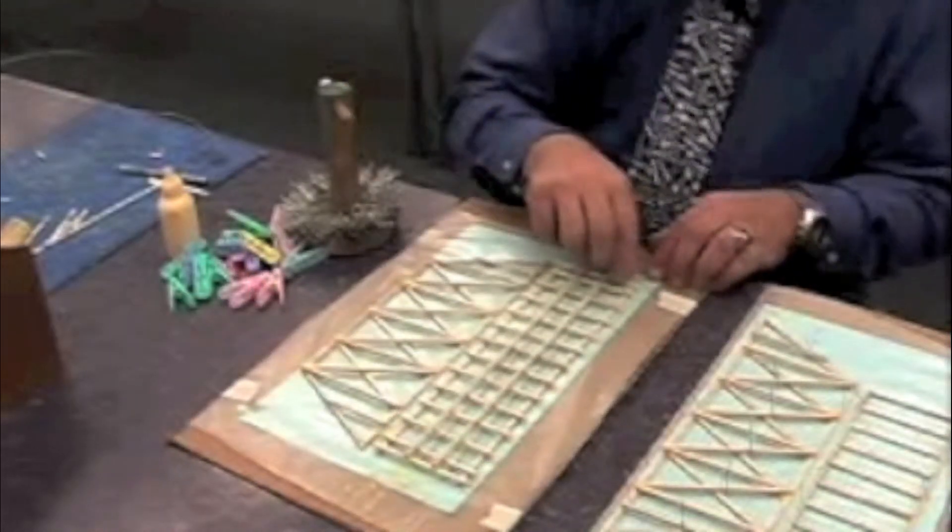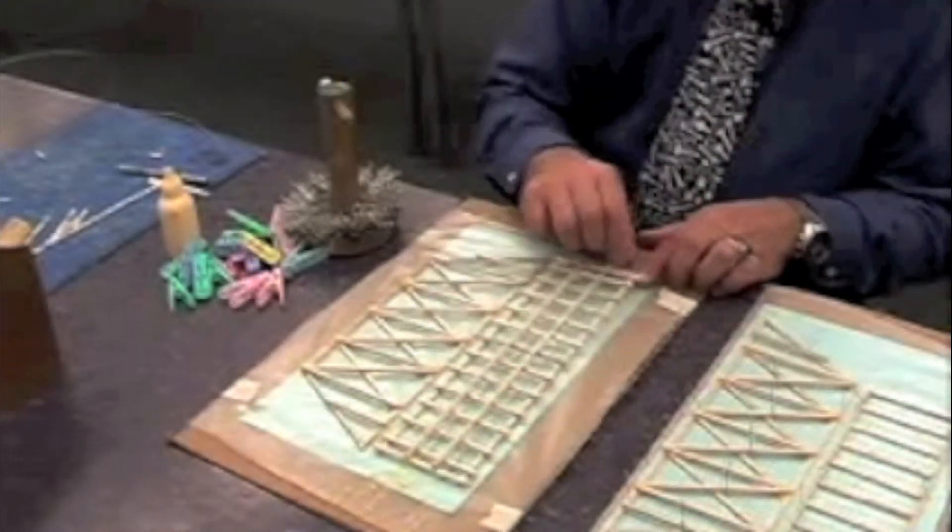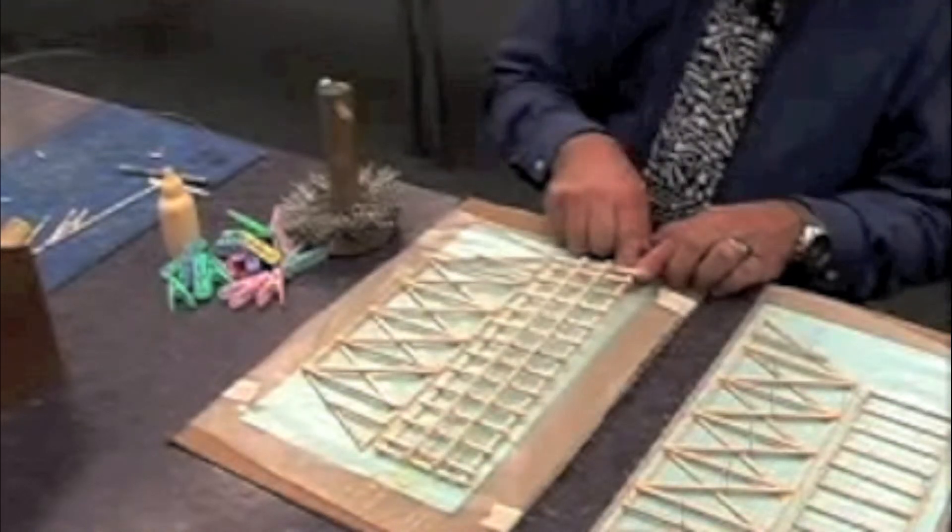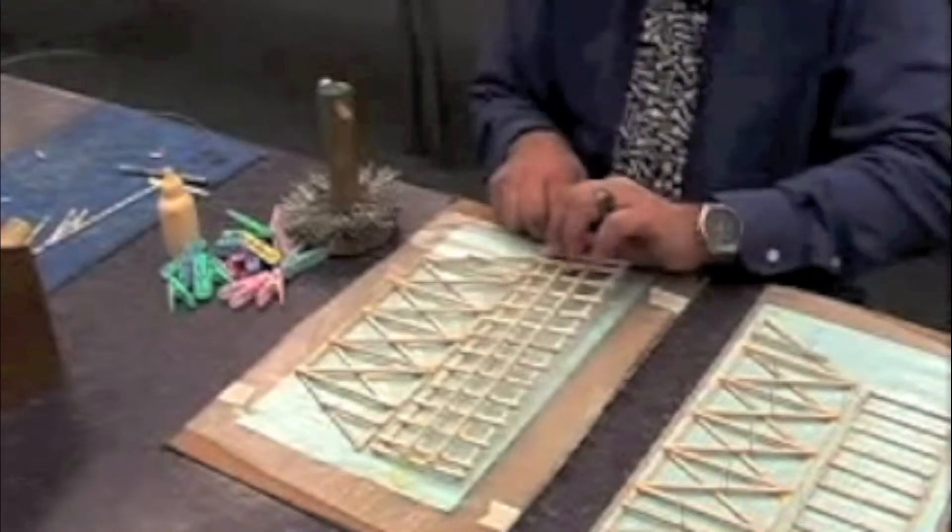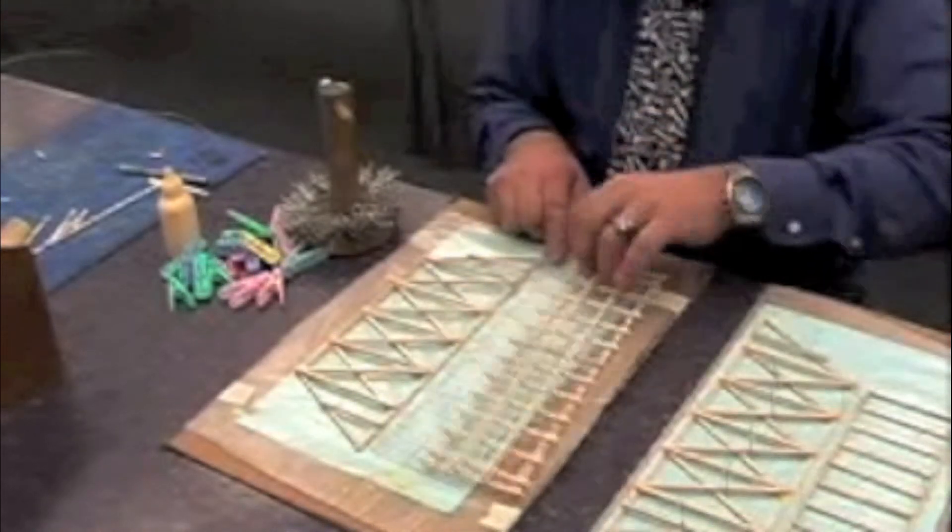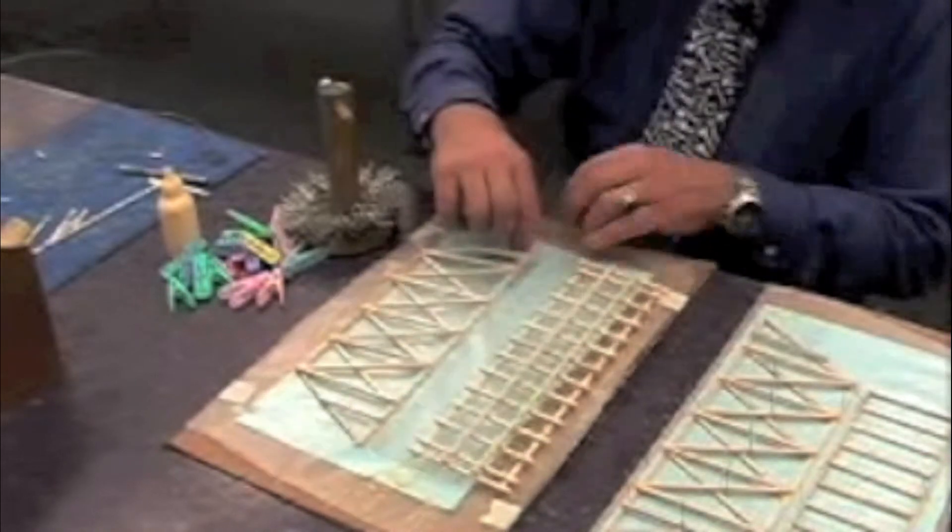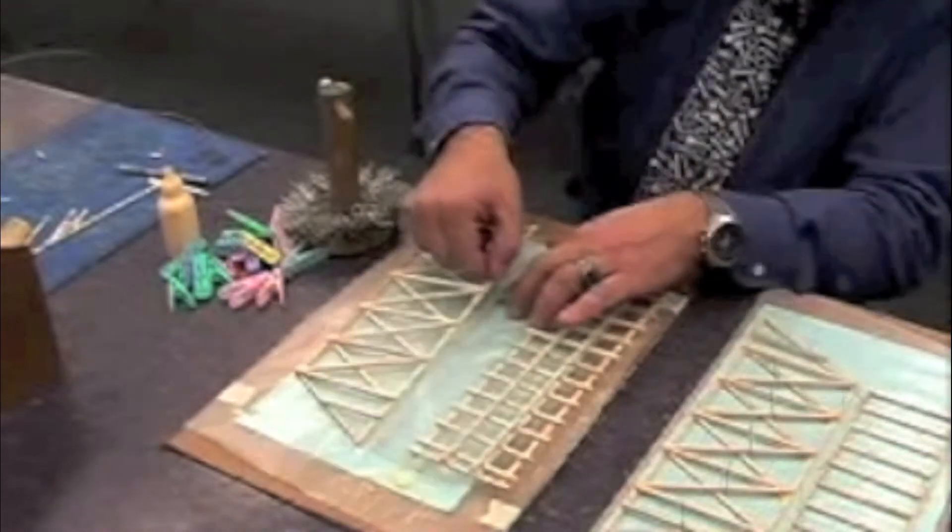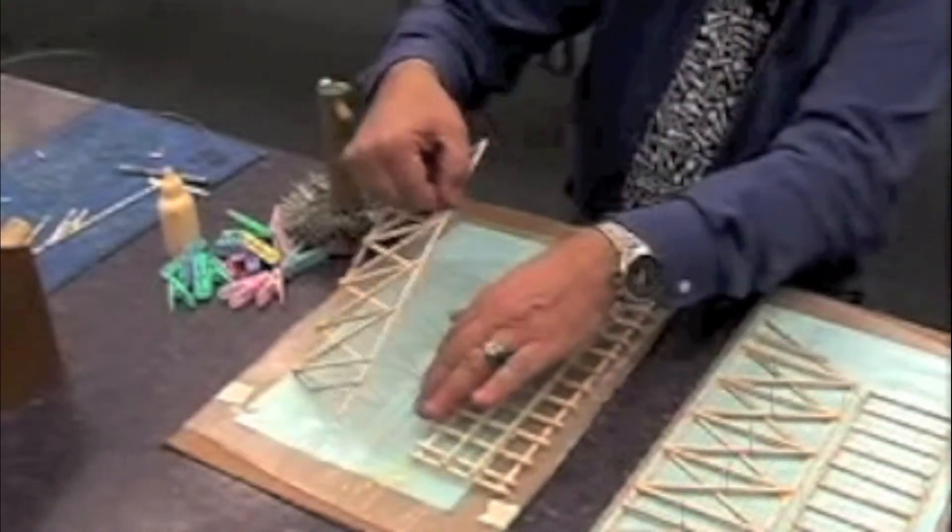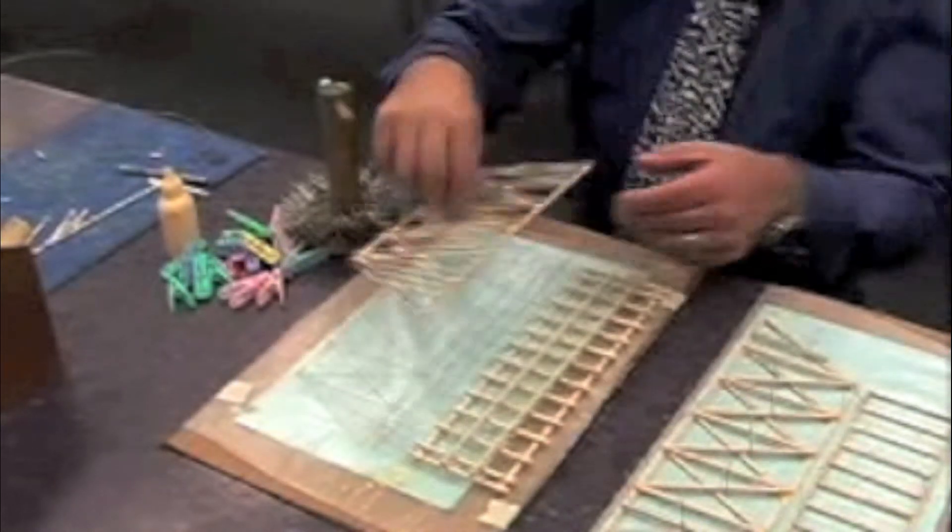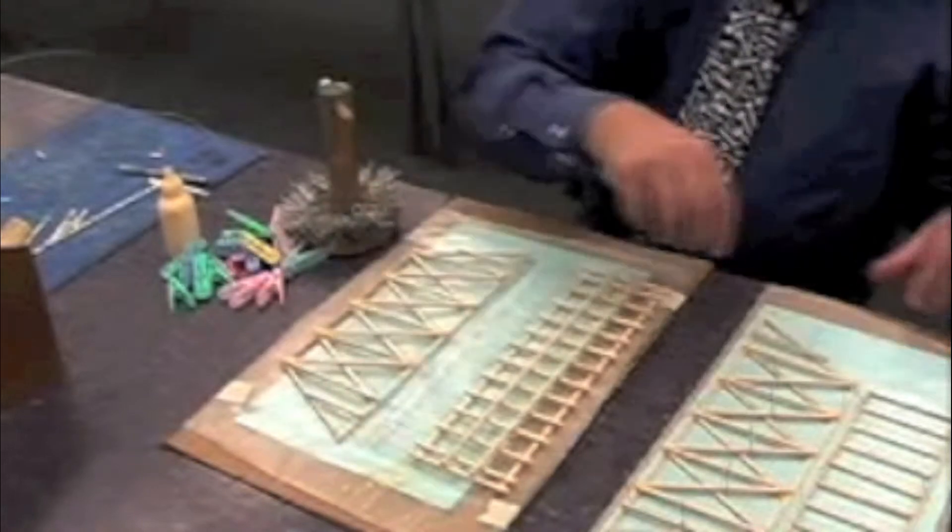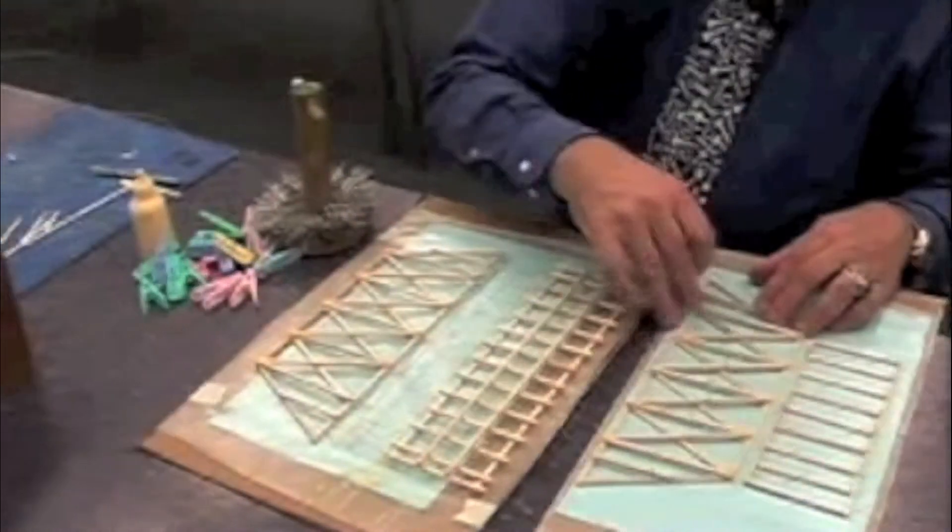If you didn't get too much glue on your project it should peel off the wax paper fairly easily. There's our bottom. You might have to slide the exacto knife under the edge to get some of them off of there. And let's get our other pins out.